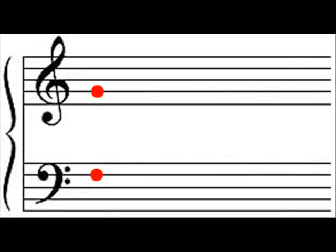In the treble clef, the curlicue shape circles around a line, and that same line — signified with the red dot — is a G, the G above middle C. Middle C being the C that's in the middle of the piano. On the bass clef, similarly, between the two dots is an F. So we call the treble clef sometimes the G clef, and the bass clef sometimes the F clef — they're just your reference points for where all the notes are.